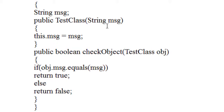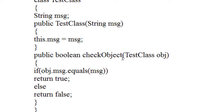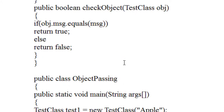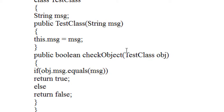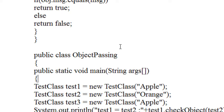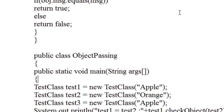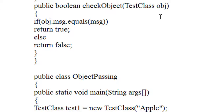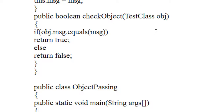Guys, this is how we pass an object as an argument to a method in Java. You will get the complete source code of this topic from my blog — the blog URL is given in the description of this video. Please subscribe to my channel for more video updates. Thank you for watching. See you in the next part of this tutorial.